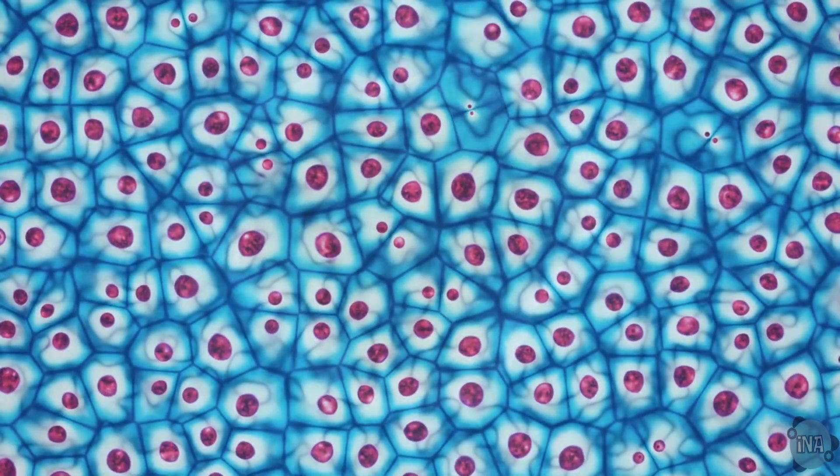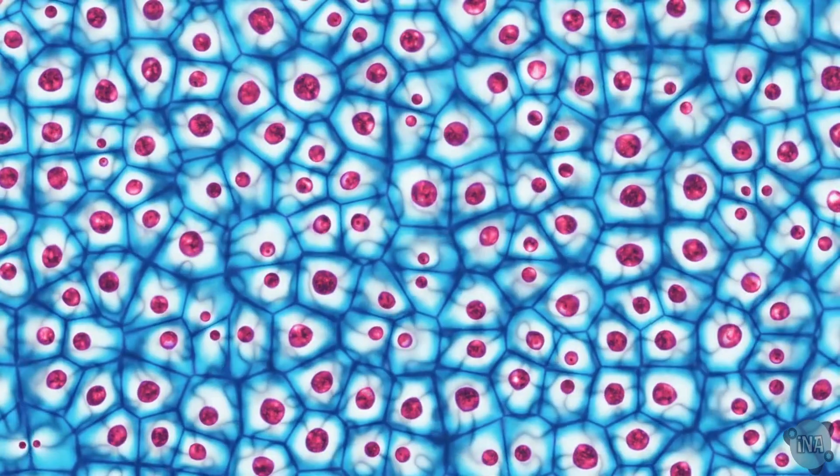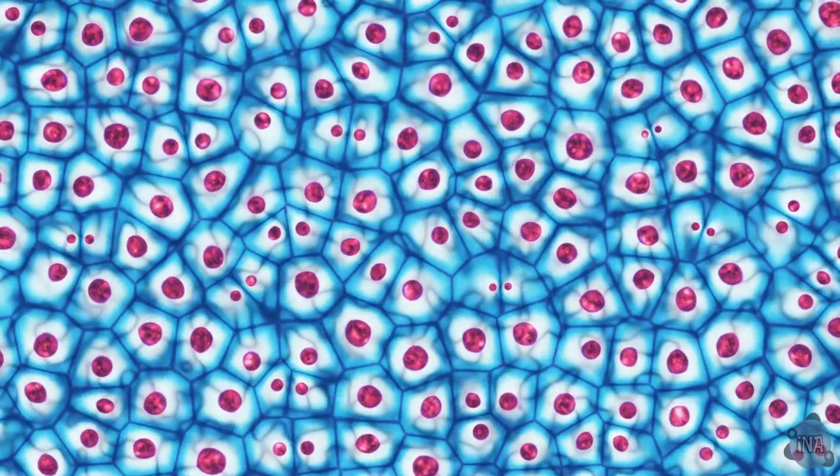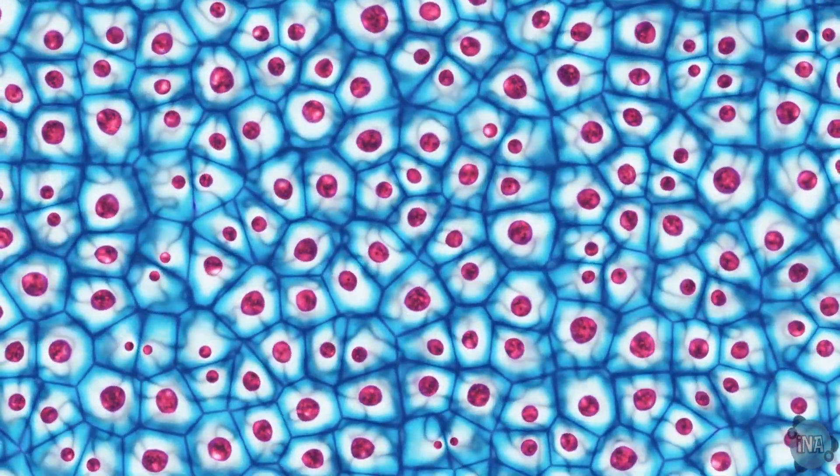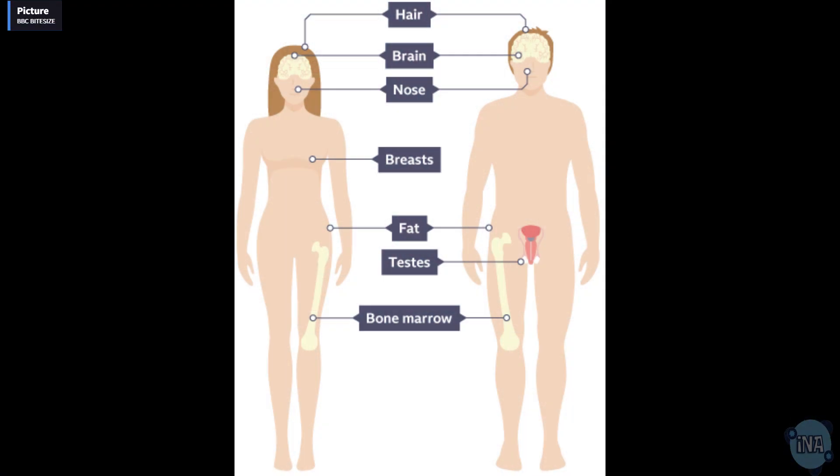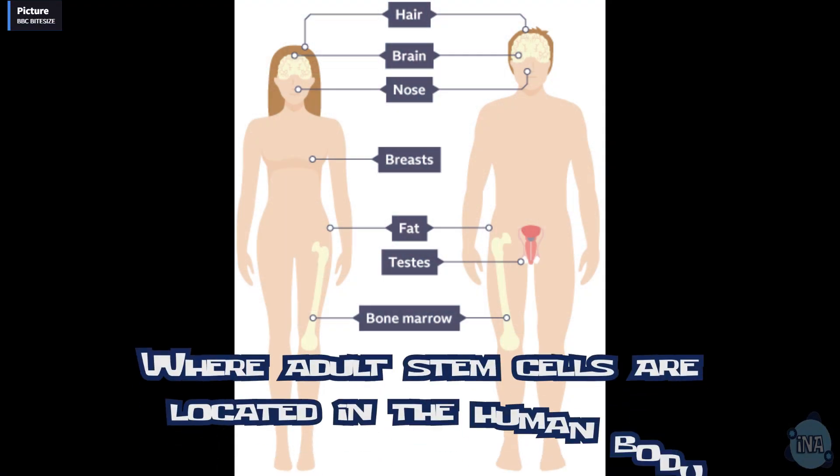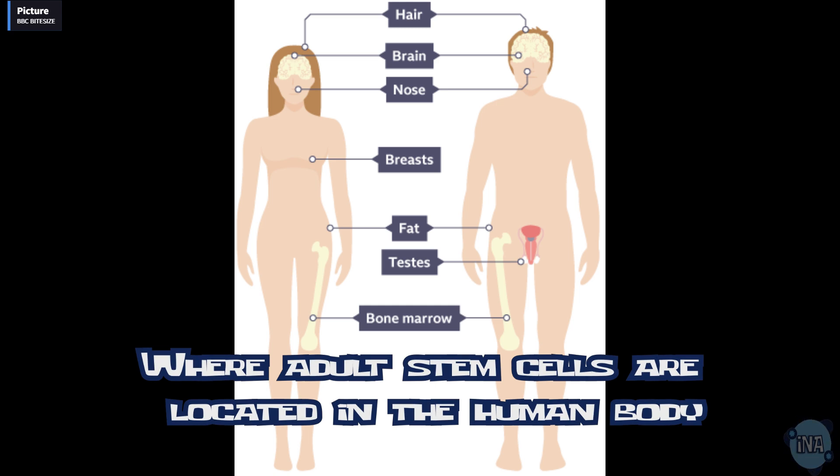On the other hand, adult stem cells, contrary to their name, are found in both adults and children. They reside in specific parts of our bodies, like bone marrow and brain tissue, ready to repair and regenerate damaged cells. Unlike embryonic stem cells, they have a more limited ability to transform into different cell types.